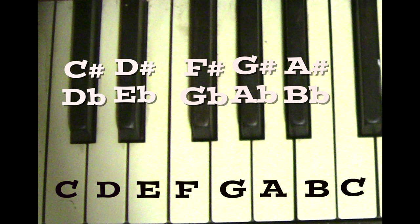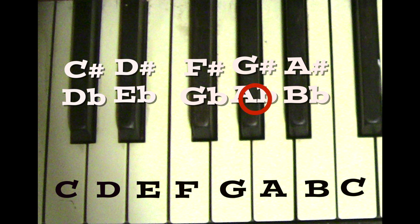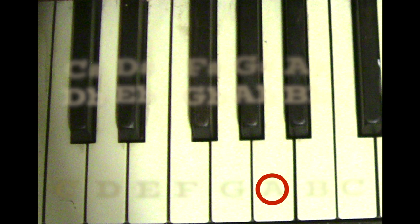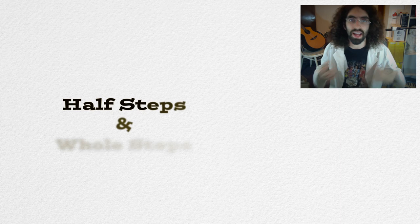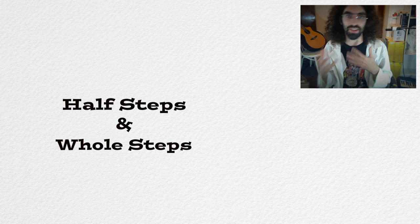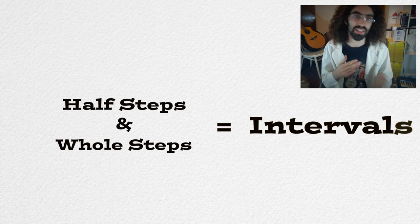If you play a note and then move it up or down to the key right next to it, that's called a half step. So when you move from one key right to the next one, that's a half step. But if you move up or down two notes — for example from A to B — that's a whole step. We talk a lot about half steps and whole steps in theory, and they're an example of an interval, which is the distance between two notes.